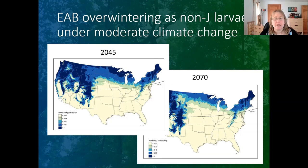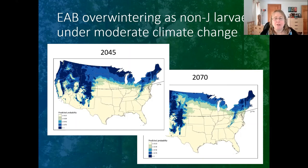By 2070, there's an even bigger part of the country where Tetrastichus will not be able to establish. It's very likely that even areas where parasitoids did establish during initial releases will no longer have a suitable climate for their persistence and would go locally extinct. Even southern Michigan, where we got great establishment of Tetrastichus, has become less and less likely to support it. However, the changes do not really happen in the Appalachians, New England, and the Rocky Mountains — those areas still remain relatively suitable for establishment and persistence of Tetrastichus.